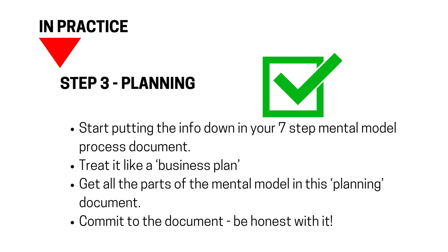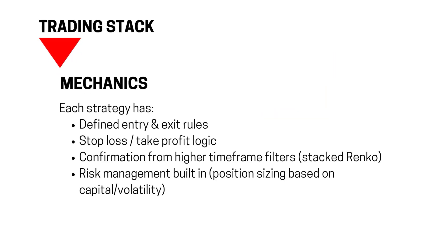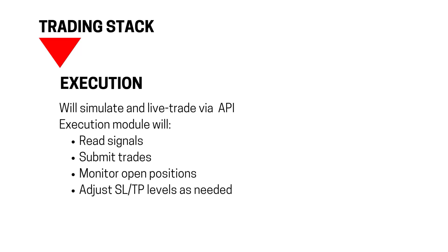All those steps need to be laid out in part three — planning the system — so you've got a road map to follow. We need to get into the detail of the strategy: each strategy needs defined entry and exit rules, stop loss and take profit logic. We might have confirmation built in from higher time-frame block size filters. We'll build in risk management around position sizing based on capital volatility, optimization techniques, and execution — how we get the data live and how the system reads signals, submits trades, and monitors open positions.